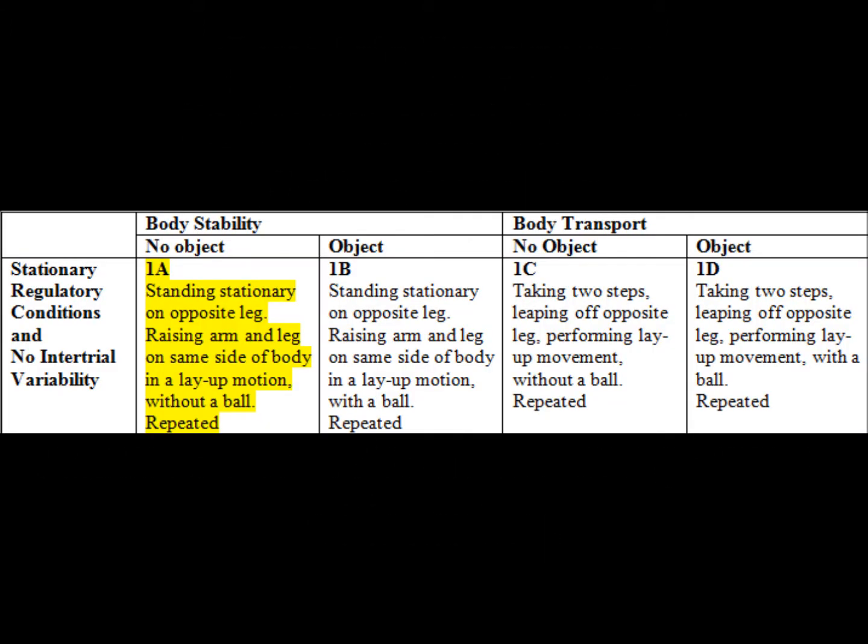1A involves raising the arm and leg on the same side of the body in a layup motion, without a ball. This is repeated five times. This is suited for the cognitive phase of motor learning and is an open loop skill, as it does not include feedback due to no object manipulation.